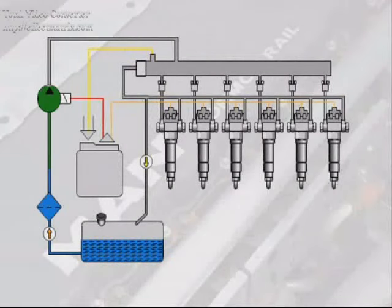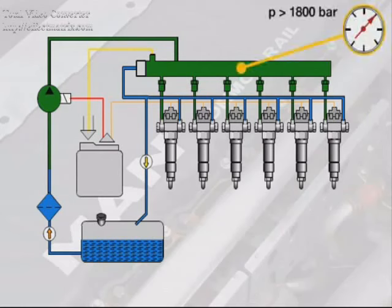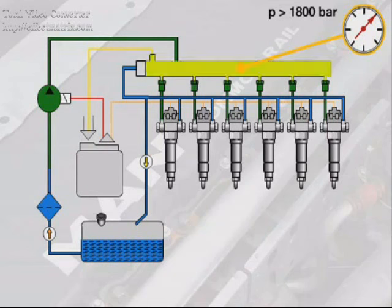In engines with a common rail fuel injection system, the injection pressure is built up independently from the load and engine speed. The single-stage high-pressure pump generates a pressure of over 1800 bar, which is available to each injection nozzle on a common distribution rail.